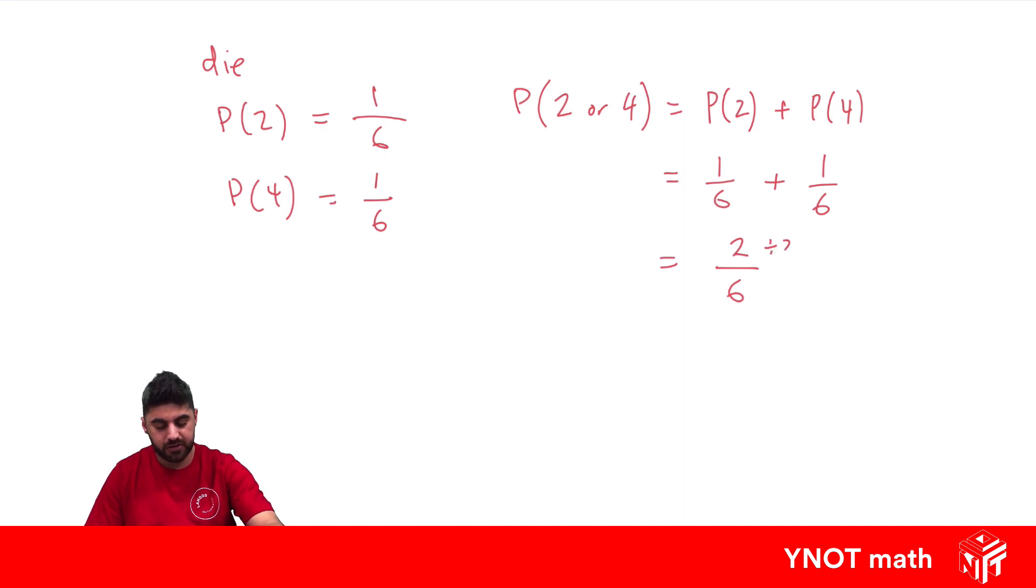It can be simplified by dividing both by 2, and we get 1 out of 3. So it's a 1 in 3 chance of getting a 2 or a 4. So for compound events, we need to remember we need to add those probabilities together.